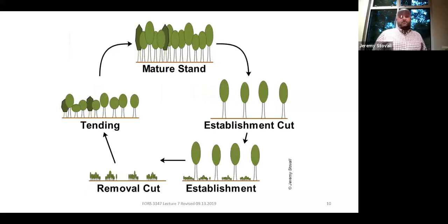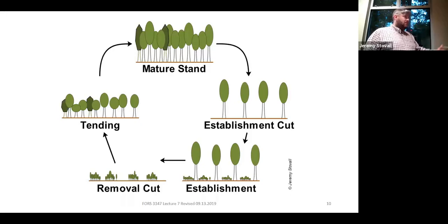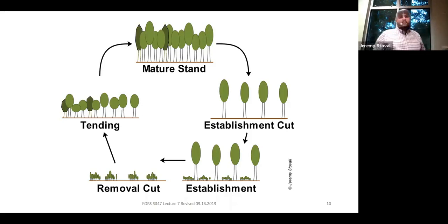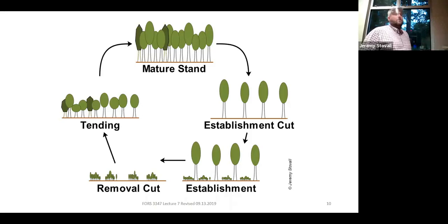Here's the simple application — the uniform shelterwood with only two cuts. Shelterwood can vary in the number of harvests used to implement it. We just saw a group shelterwood that's almost like a group selection system coming in every 15 or 20 years. Whereas the uniform shelterwood produces an even-aged stand, just like a seed tree. You do the establishment cut, get new establishment, then do the removal cut. For the overwhelming majority of your rotation — say five to ten years between the two cuts on an 80-year rotation — you've got an even-aged stand. This is why we think of the shelterwood as an even-aged system.